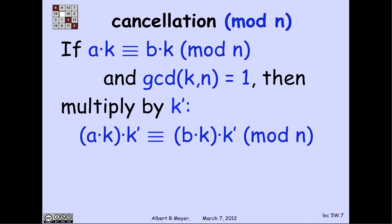So I just multiply both sides by the inverse of k, namely k'. And I get that the left-hand side is a times k·k'. And the right-hand side is b times k·k'. And, of course, that's a times 1 is equivalent to b times 1. And so a ≡ b (mod n). So I can cancel in that case, trivially.